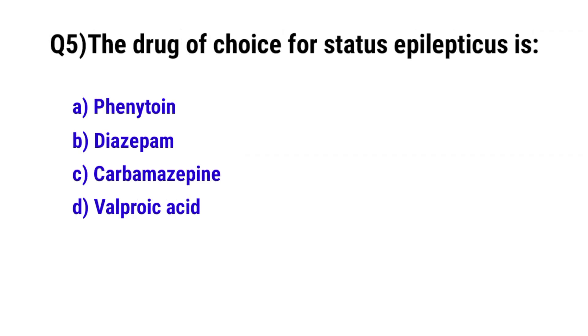Question No. 5. The drug of choice for status epilepticus is? The correct option is B: Diazepam.